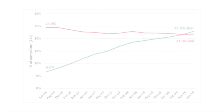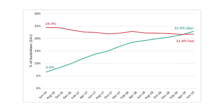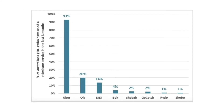As for the Uber example, prices were quite high when it first started in Australia. But as more drivers shifted from taxis to ride-sharing, the supply of drivers met the demand. Prices started to drop, and now passengers get to enjoy greater convenience at lower prices from a range of ride-sharing providers compared to when it was just taxis.